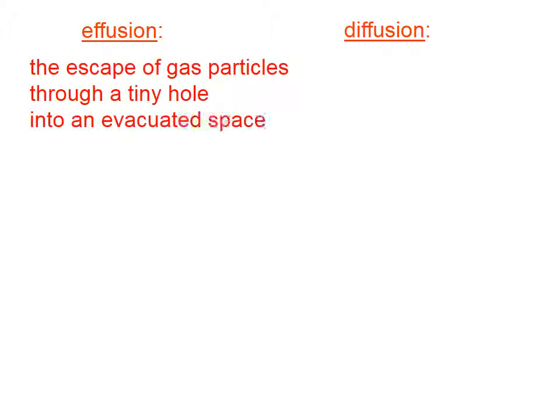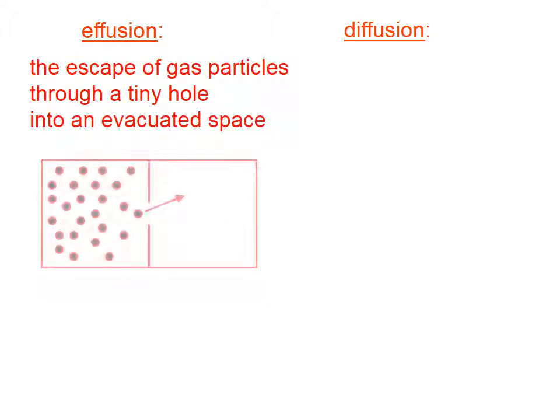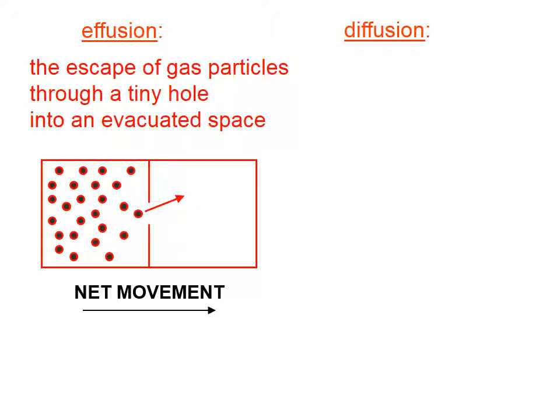Effusion is the escape of gas particles through a tiny hole into an evacuated space. This picture here illustrates effusion. We have a tiny gap between these two chambers. One side has gas particles, the other side initially doesn't. These gas particles are going to escape through that opening. There will then be a net movement of gas particles to the right here. There might be a few that end up on the right side and then end up sneaking back to the left, but there will be more moving from left to right than back from right to left.